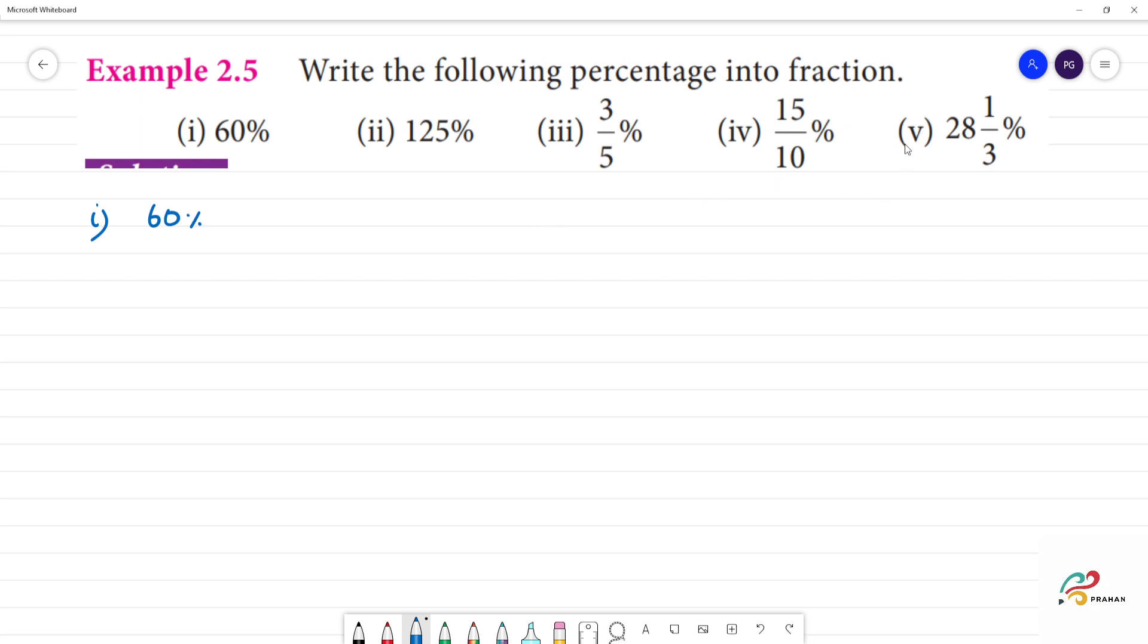If you look at it, you can click on the first one. So what to do is percentage to fraction. Percentage to fraction, divide by 100. Clear.